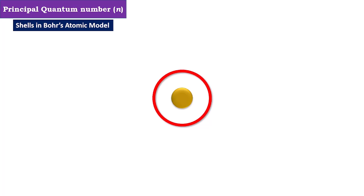Let's consider shells in Bohr's atomic model. This is the nucleus. Around this nucleus, the first shell where electrons are revolving, having the value of principal quantum number n equals 1, we call it the K shell.